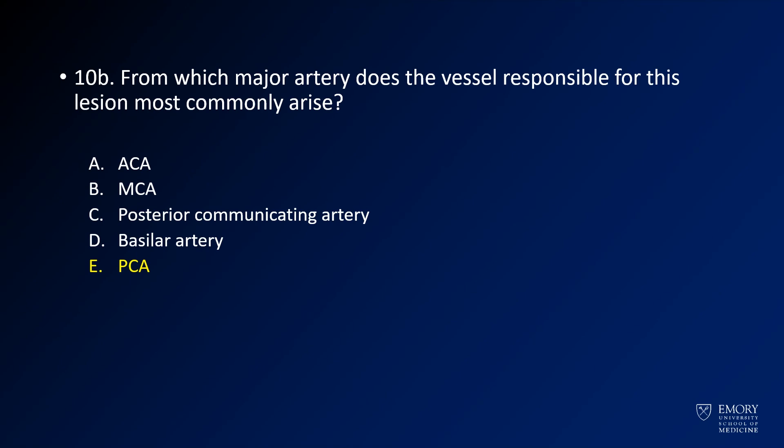The answer to question B is that the Artery of Percheron arises from the PCA — thalamic perforators most commonly come from the PCA. If the supply to both thalami comes from one side, that is the definition of the Artery of Percheron.